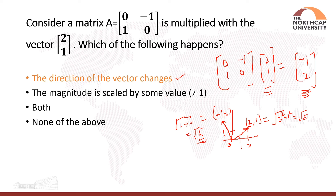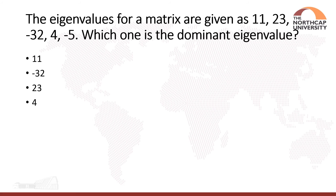The next question gives eigenvalues 11, 23, −32, 4, −5 and asks which is the dominant eigenvalue. The dominant eigenvalue is the one with the greatest absolute magnitude. The greatest absolute value among 11, 23, 32, 4, and 5 is 32. So −32 is the dominant eigenvalue.